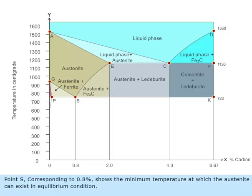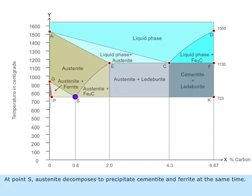Point S corresponding to 0.8 percentage shows the minimum temperature at which austenite can exist in equilibrium condition. At point S, austenite decomposes to precipitate cementite and ferrite at the same time. This results in the formation of pearlite.